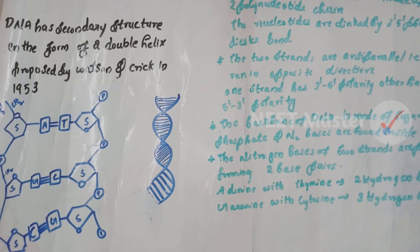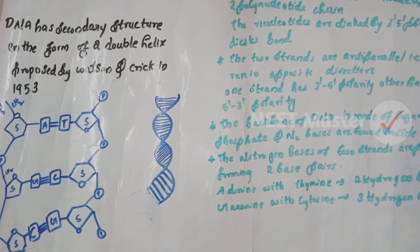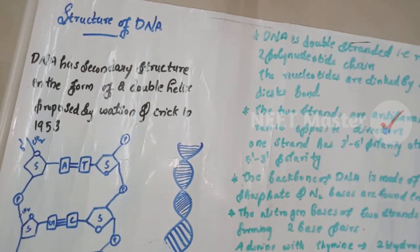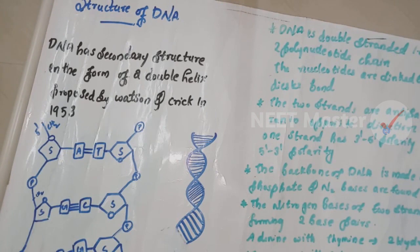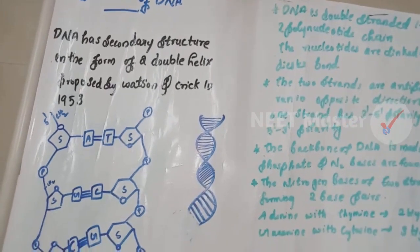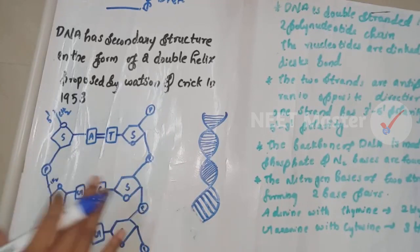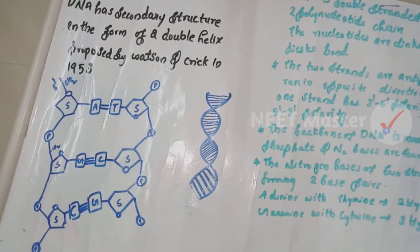Now, how saccharides are linked in the glycosidic beta bond. Nucleotides are attached via a phosphodiester bond. The structure of DNA — DNA has a secondary structure in the form of a double helix. This structure was proposed by James Watson and Francis Crick in 1953, who explained this double helix structure of DNA.